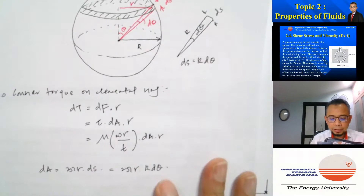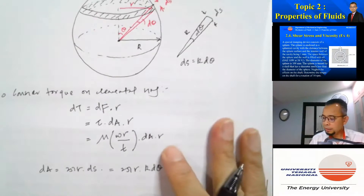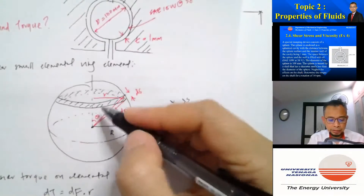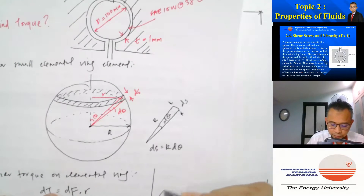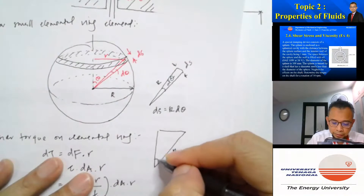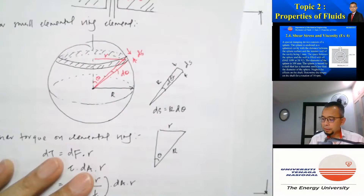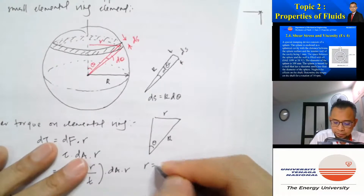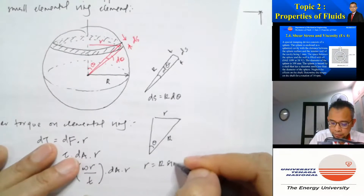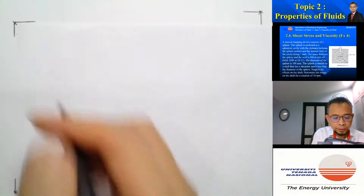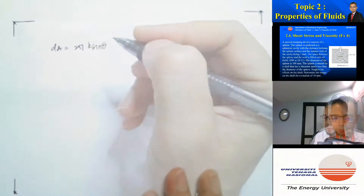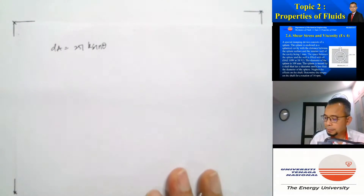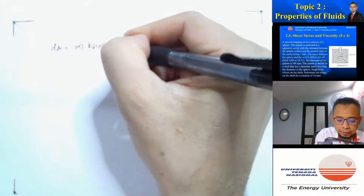Looking at the relationship between small r and big R using the triangle, with big R as the hypotenuse and theta as the angle from the axis, we can see that small r equals R sin θ. So we can write dA equals 2π times R sin θ times R dθ.